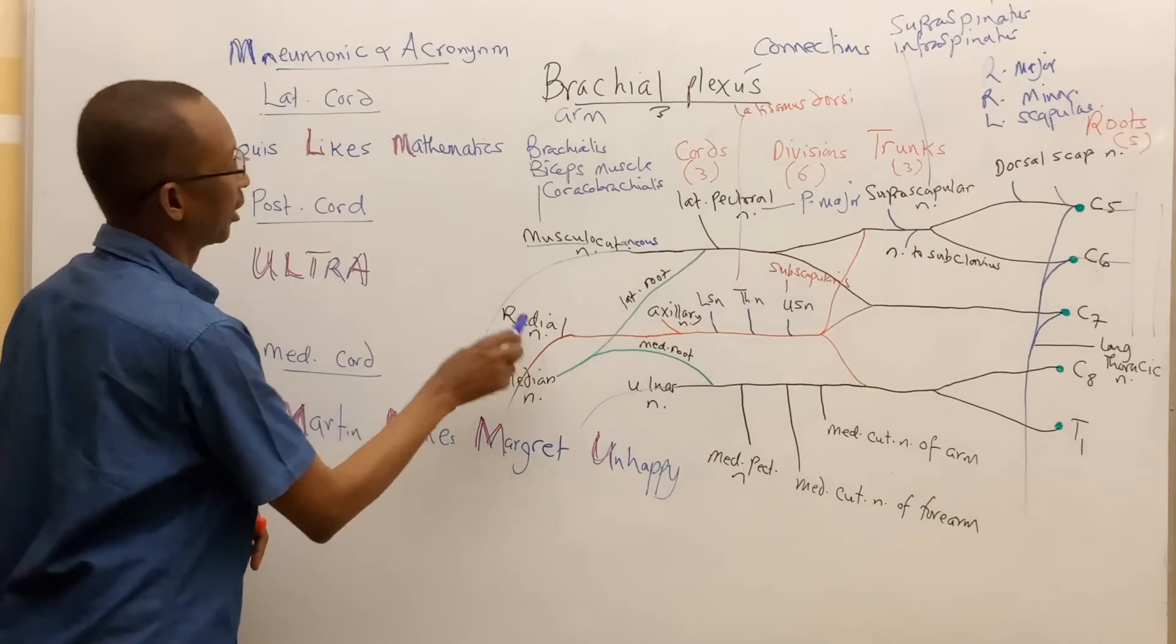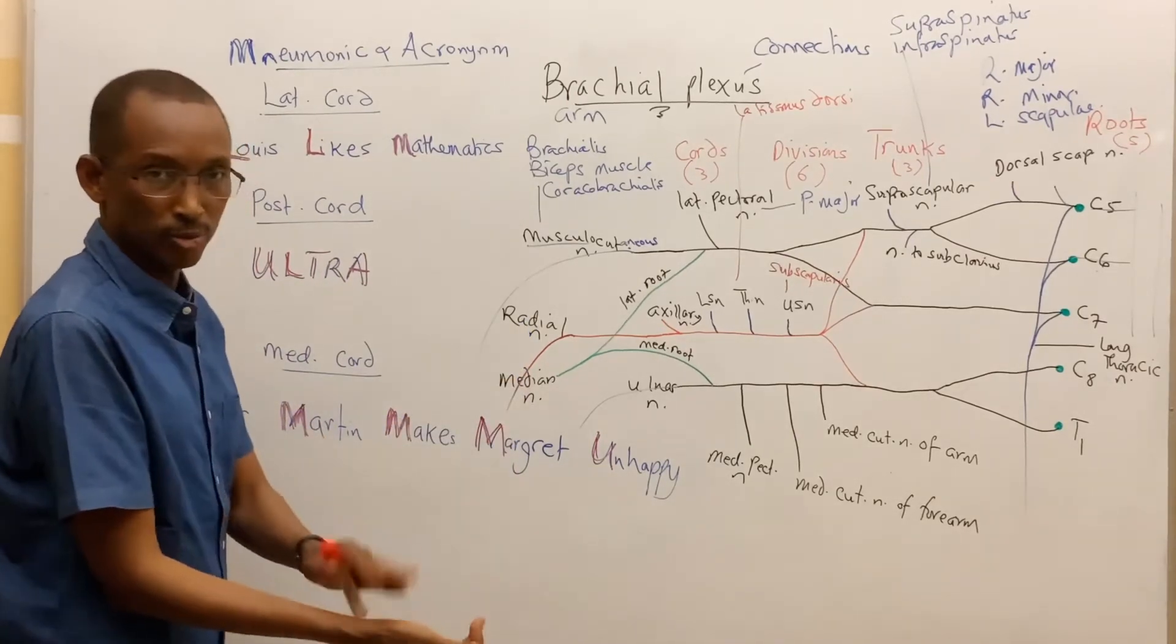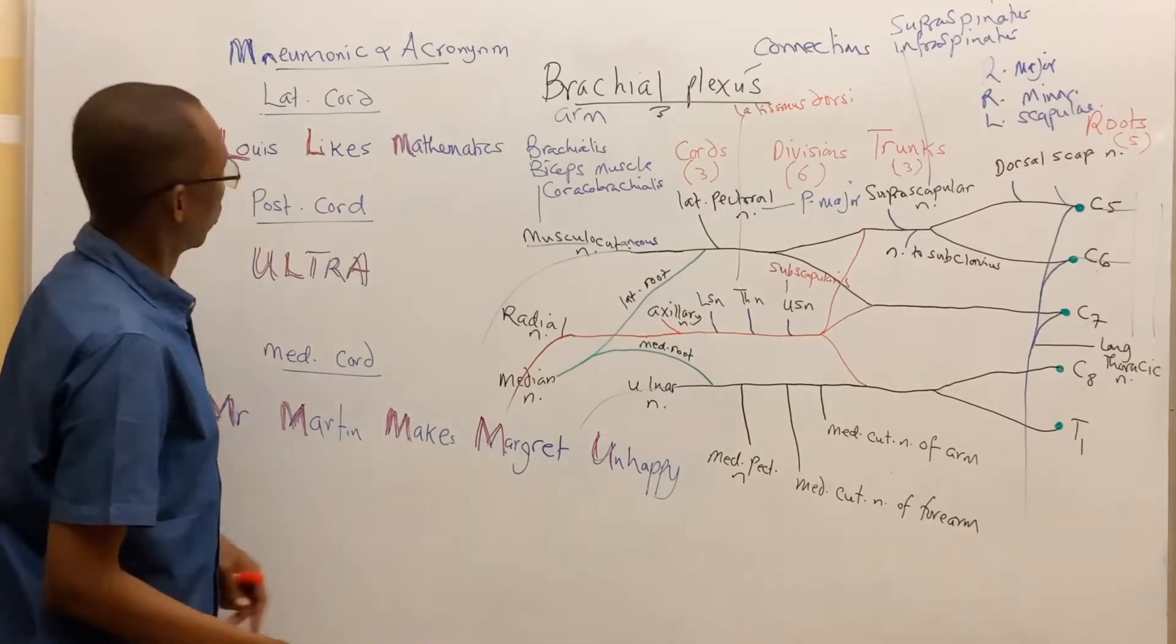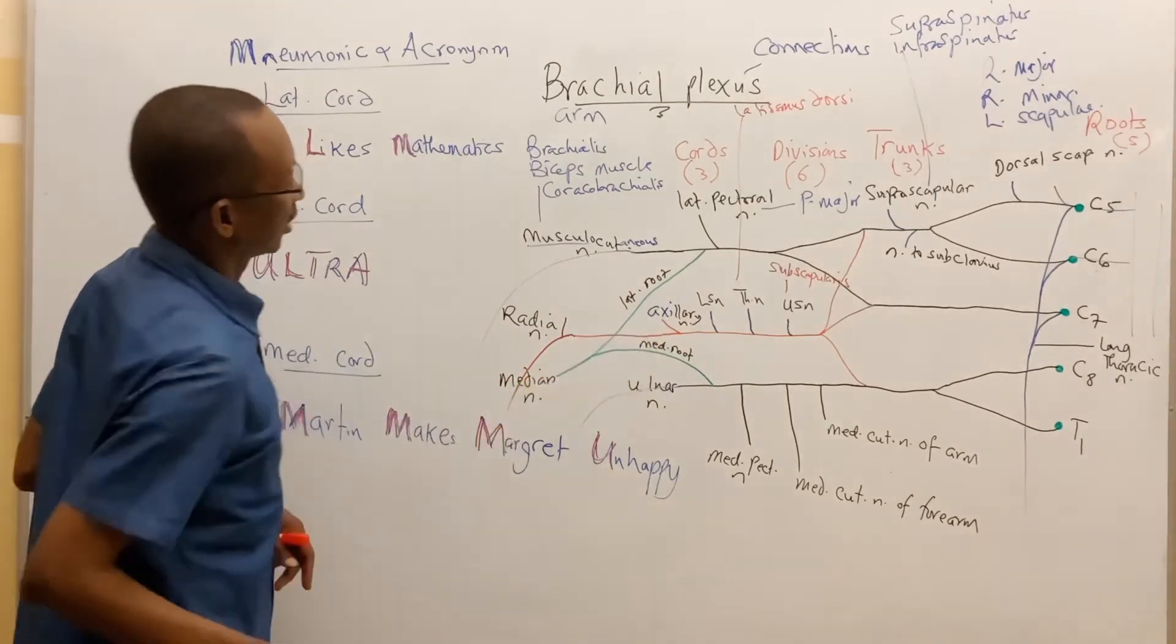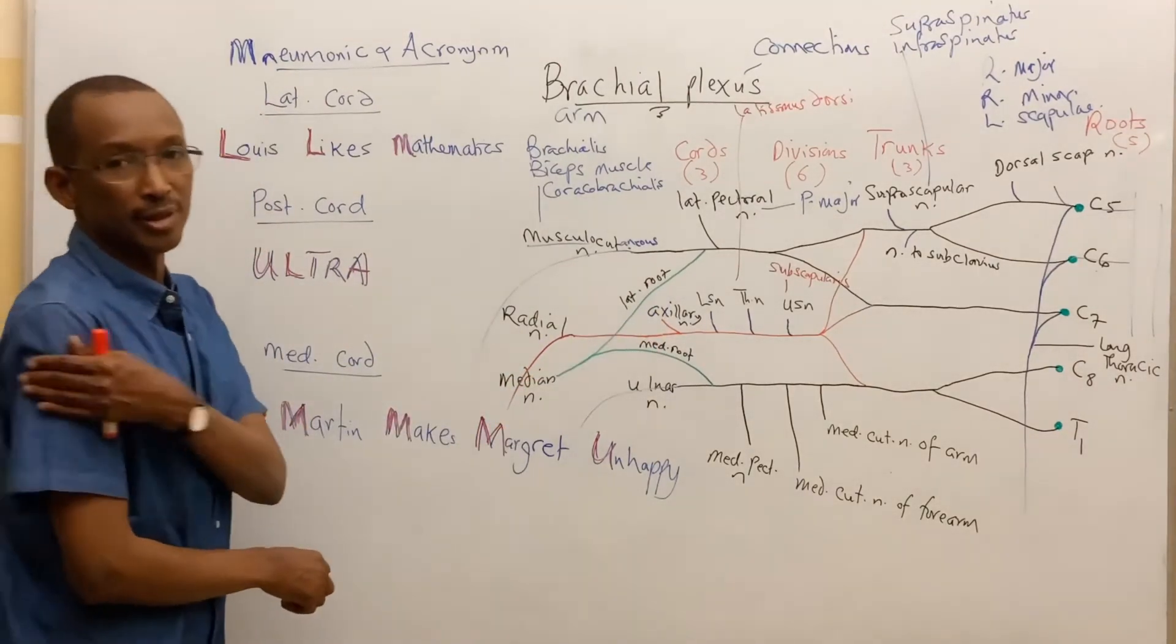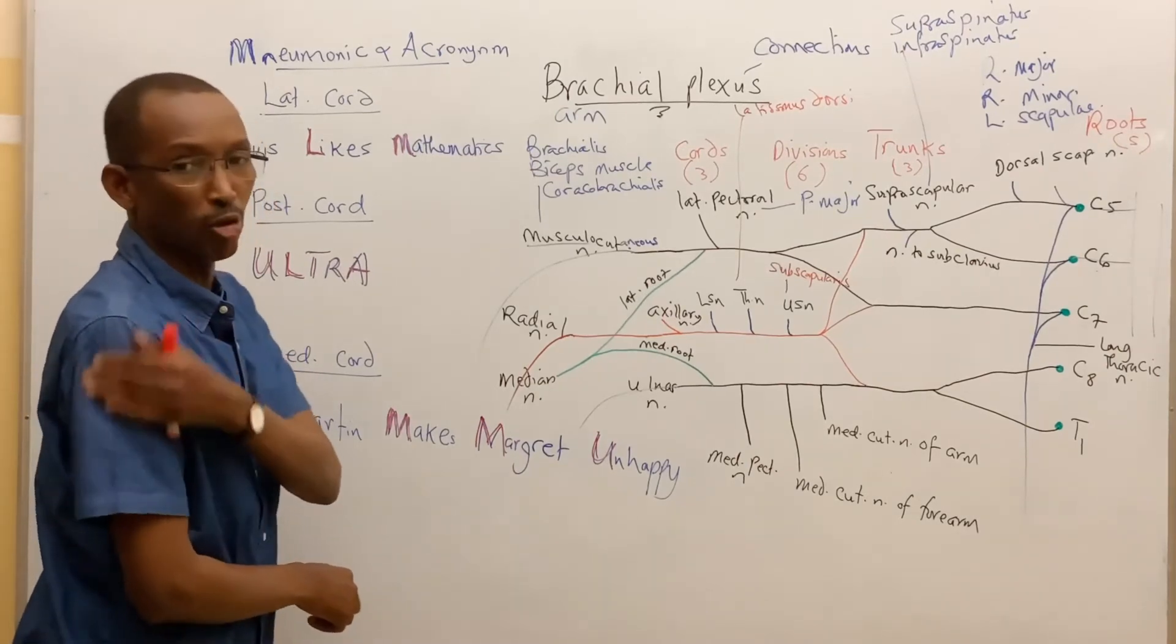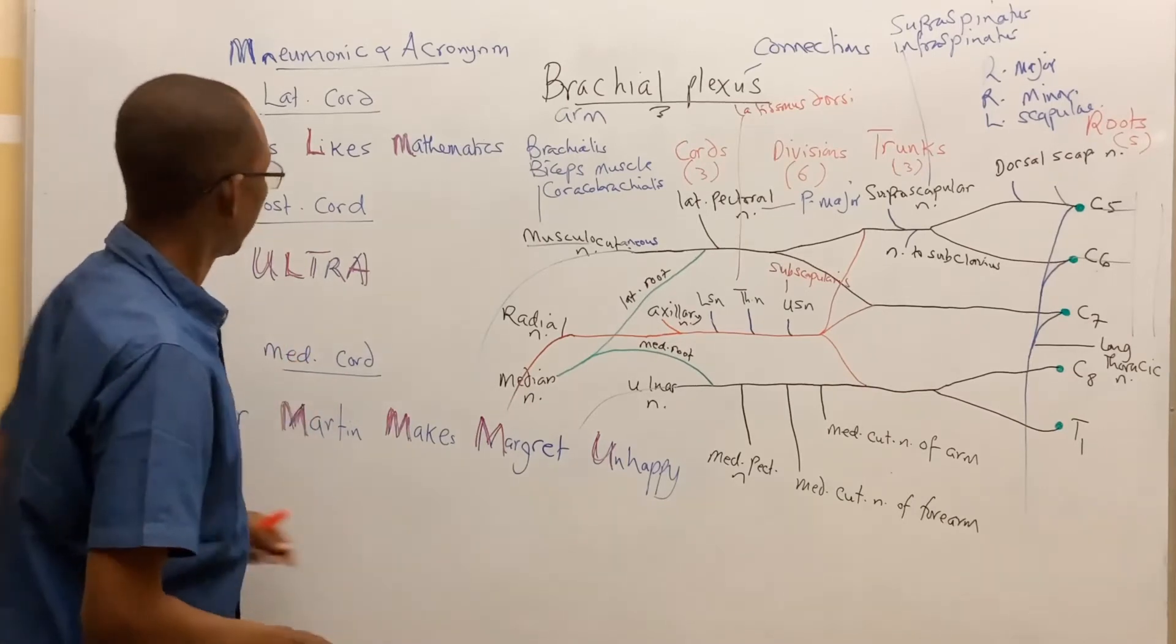And R for the radial nerve, which I already said supplies the extensors of the elbow, extensors of the wrist, and also the fingers, as well as the skin around those areas. And A for the axillary nerve, I've already made mention that axillary nerve supplies the deltoid muscle, teres minor, and the skin over this muscle, a patch of skin that is lying over the deltoid muscle.